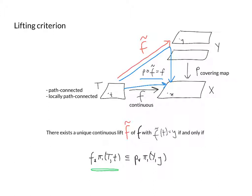The condition says that if we take a loop in T based at little t and push it forwards along F, what we get is contained in the image of the map P★, which pushes loops down from the covering space to X. So if we take a loop γ based at t and push it forwards along F to get F★(γ), we're requiring that this loop F★(γ) is the pushforward of a loop based at y — in other words, there's something in the covering space that projects down to F★(γ).